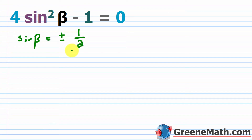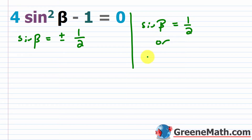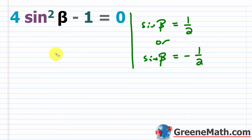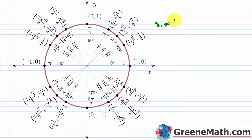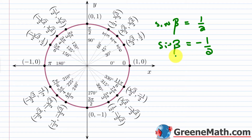This gives us two scenarios: sine of beta equals 1/2, or sine of beta equals negative 1/2. We go to the unit circle and look for where the y-coordinate is 1/2 or negative 1/2.